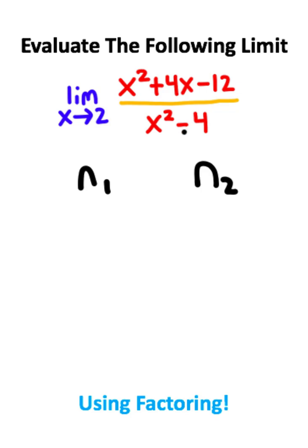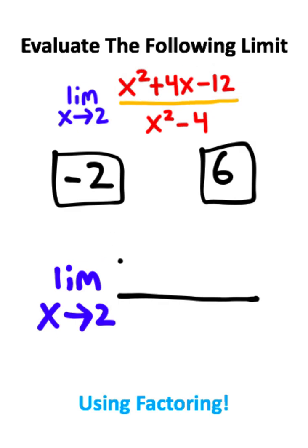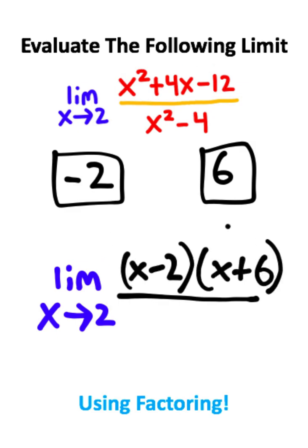Now if I think about the two numbers I need, the two numbers that come to mind are negative 2 and 6. So the top of this fraction will factor into x minus 2 times x plus 6 based on the pair of numbers that we found.